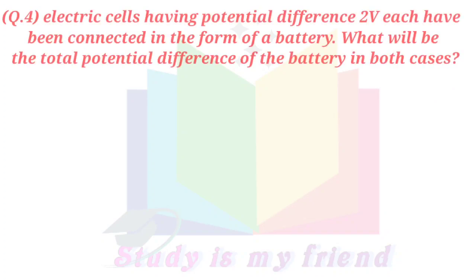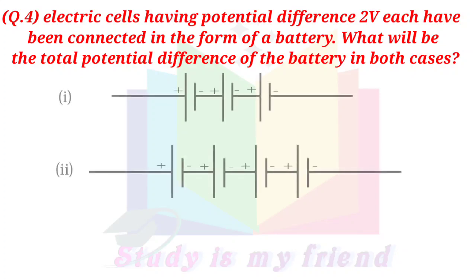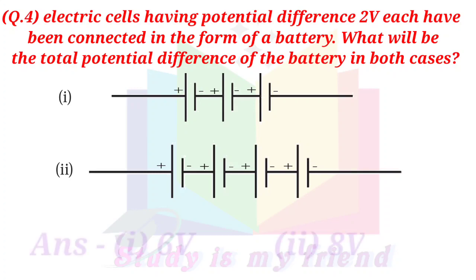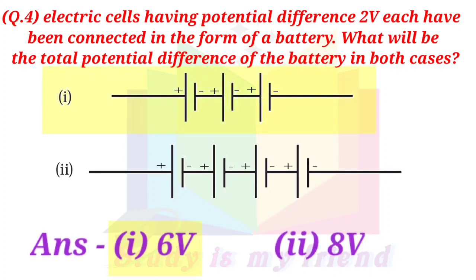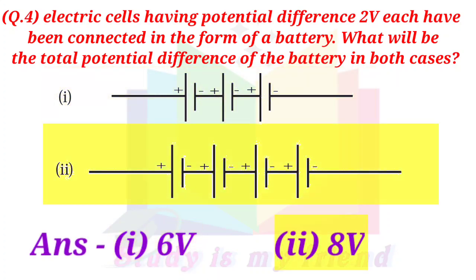Question 4. Electric cells having a potential difference of 2V each have been connected in the form of a battery. What will be the total potential difference of the battery in both cases? Answer. 1. 6V. 2. 8V.